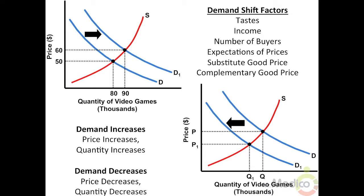Second, consumer income — an increase in income will shift the demand for a normal good to the right, but a decrease in income will shift demand for an inferior good to the right. Third, number of buyers — an increase in the number of buyers in the market will shift demand to the right. Fourth, substitute goods price — an increase in the price of a substitute good will shift the other substitute's demand to the right.